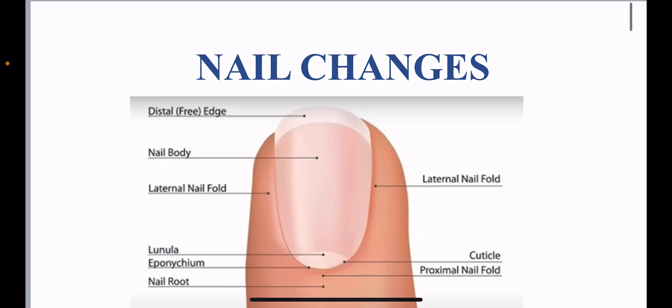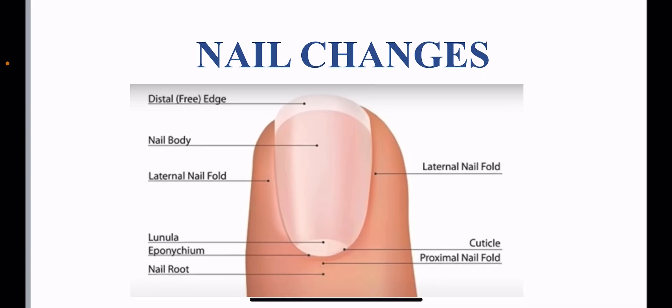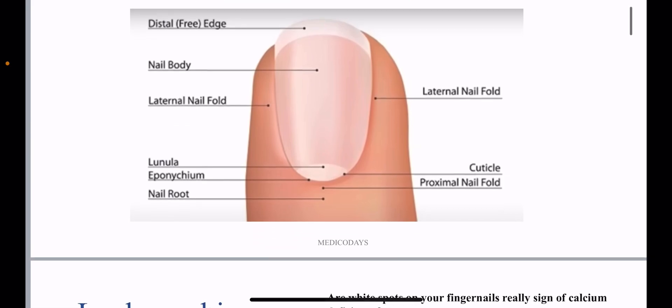These are the parts of the nails: the distal edge, the nail body, the lateral nail fold, the lunula, the eponychium, the nail root, the proximal nail fold, the cuticle, and the lateral nail fold. All of these are marked here — all the parts of the nail.